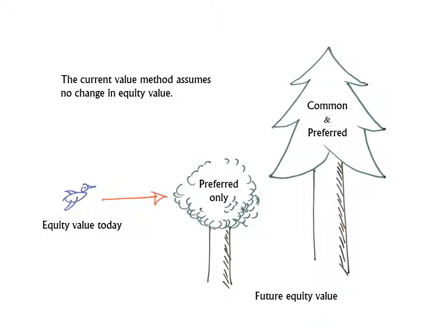The simplest of the three allocation methods is called the current value method. It assumes no difference between the equity value today and the future equity value. Most people agree this is not a very realistic assumption, and the current value method can be used only in very limited circumstances — either when the company is a cold start-up or when a liquidity event is about to occur at a known value.